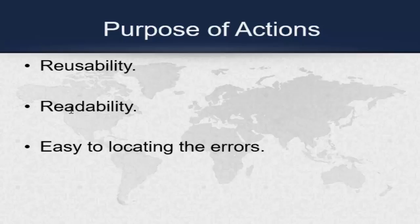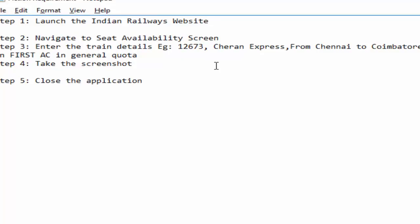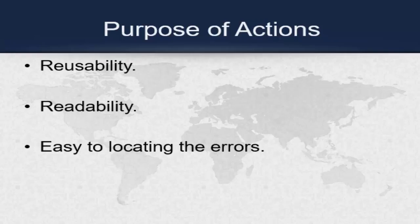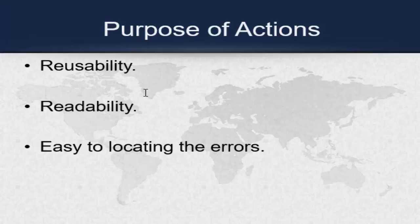From this example, the first benefit is reusability. How will this be reusable? If you are creating another scenario which also needs the launch of the Indian Railway website and close the application, you can reuse those particular actions. The second benefit is readability. Here it is just five steps, but consider a scenario where you have 50 or 100 steps. Instead of coding every statement into a single action, if we divide it into separate actions, it will be easy to understand.